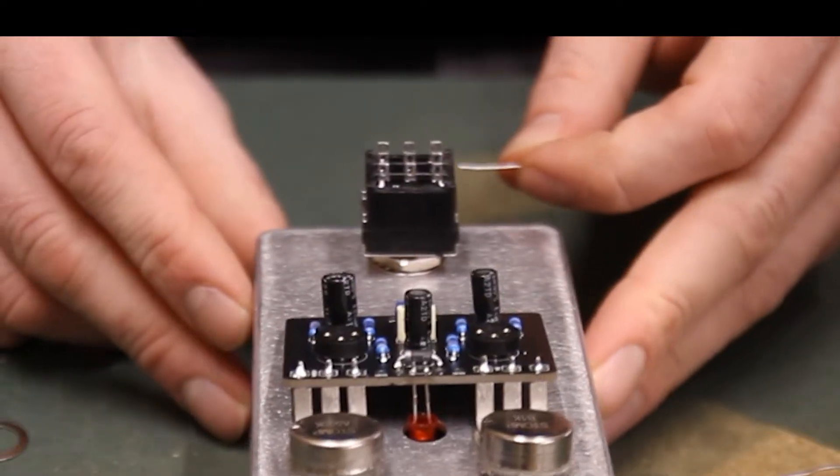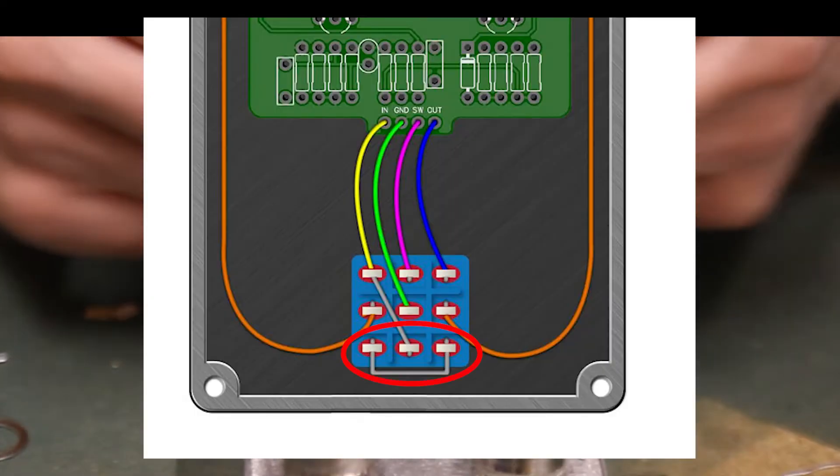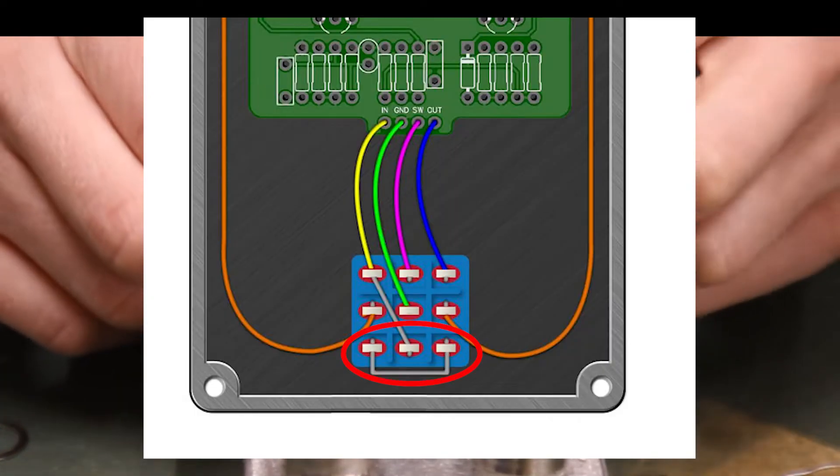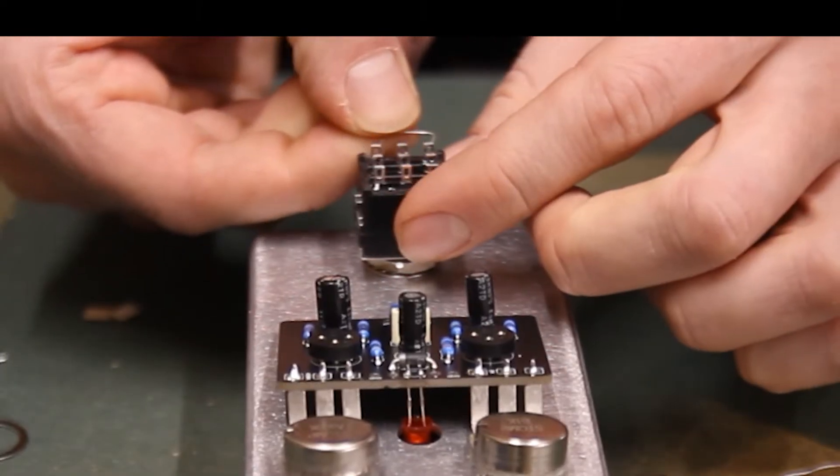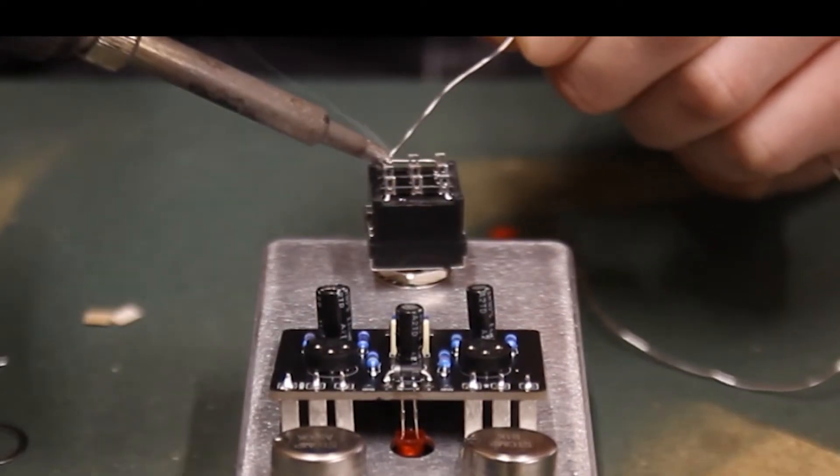Grab a clipped component leg and shape it so that it can fit through the outer, bottom lugs of the switch. Using tweezers will definitely help maneuver this. Solder in this jumper wire on both sides.